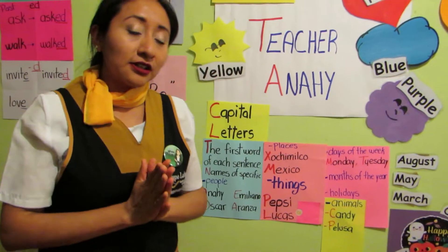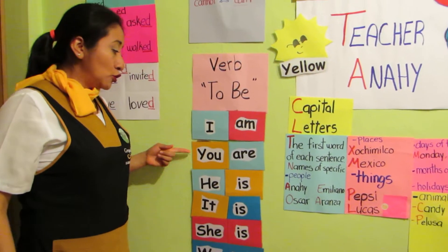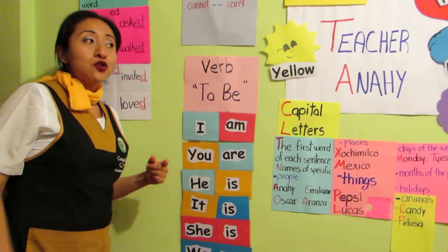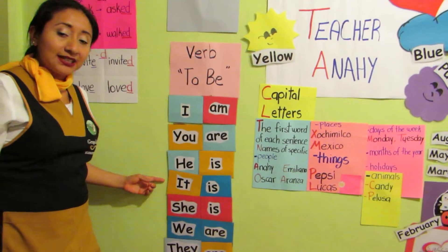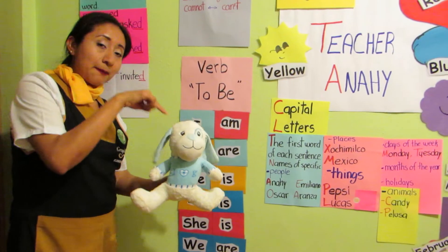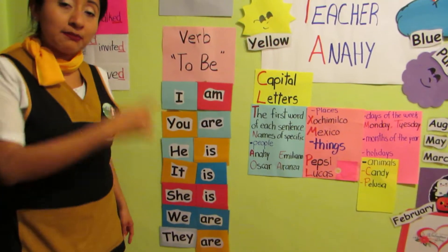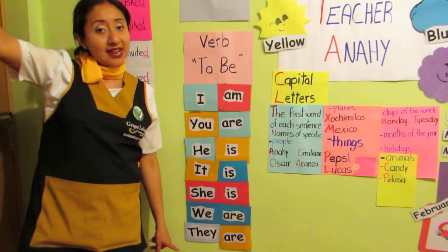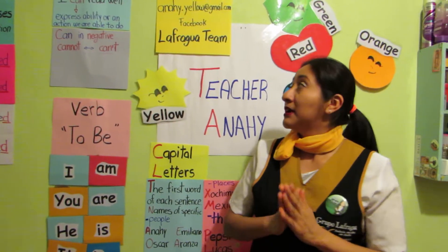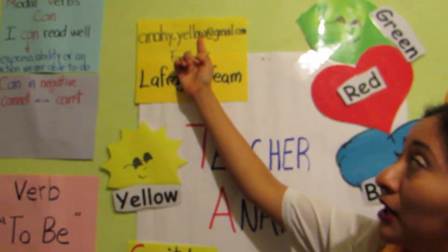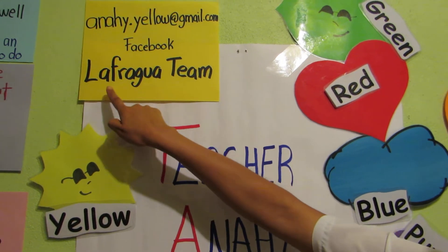Also remember to study the verb 'to be.' I am — I am Anaí. You are — for example, you are special for me. He is — he is my brother. It is — it is my pet, Pelusa. She is — she is my sister. We are. They are. If you have questions, write me at anai.yellow@gmail.com and visit us on Facebook as the Lafragua team.